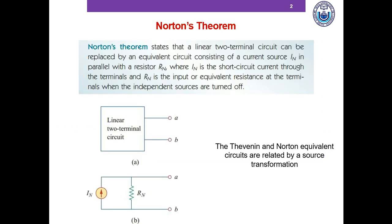Today we are going to talk about Norton's theorem. What Norton's theorem allows us to do is that it reduces a large fixed portion of a circuit into only two elements: an independent current source and a resistor in parallel with that independent current source. This current source is called the Norton current IN and this resistance is called the Norton resistance RN.